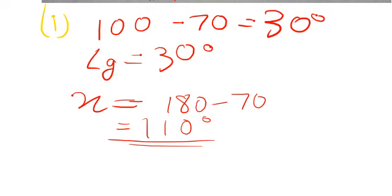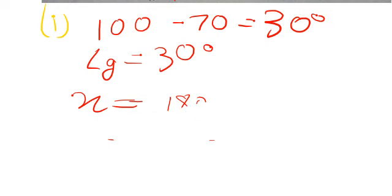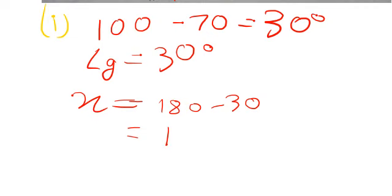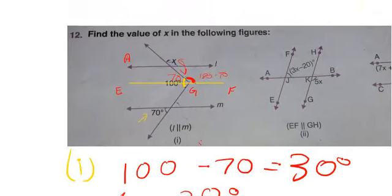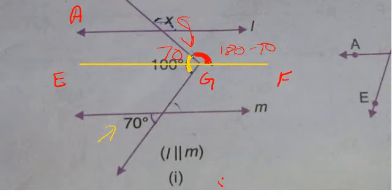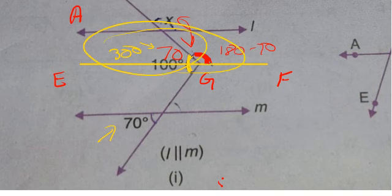So angle x equals 180 minus 30, which is 150 degrees. Note: the relevant angle here is 30 degrees, not 70. So x equals 150 degrees.